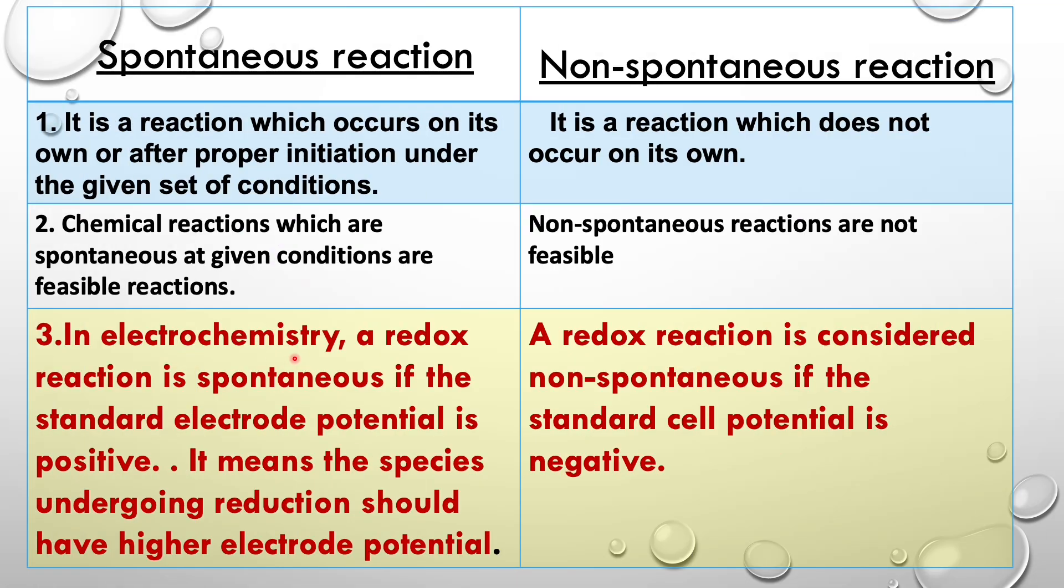In electrochemistry, a redox reaction is spontaneous if the standard electrode potential is positive. It means the species undergoing reduction should have higher electrode potential.